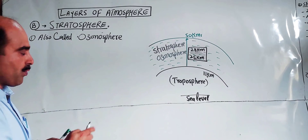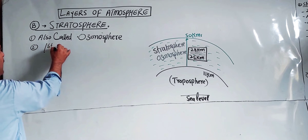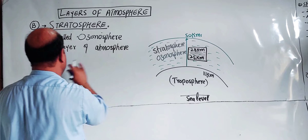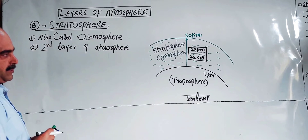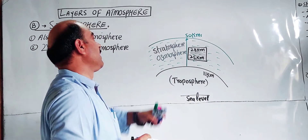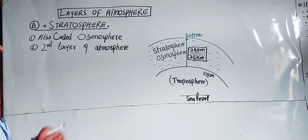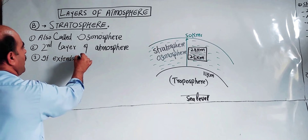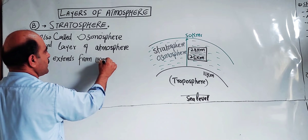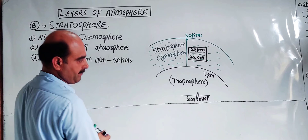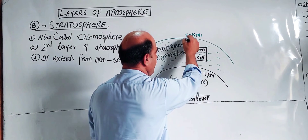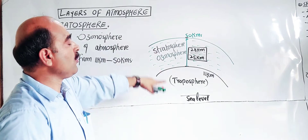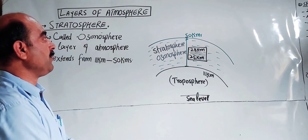The second layer of atmosphere is stratosphere. It extends from 11 kilometers to 50 kilometers. The second layer contains the ozonosphere within the stratosphere. The ozone layer is found within this area, and the largest area of the stratosphere is this region.